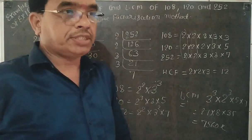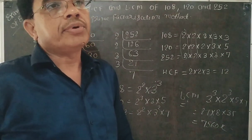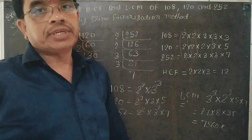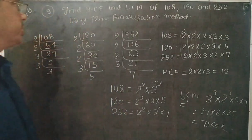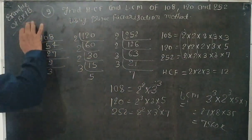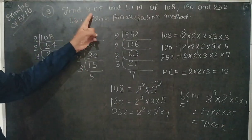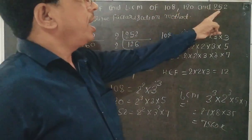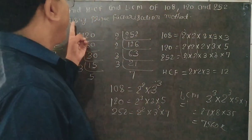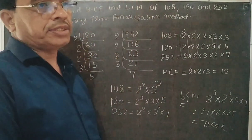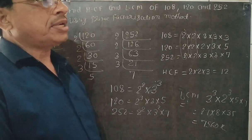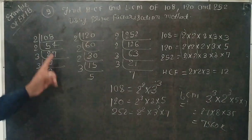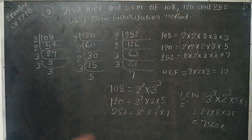Please see here — all questions are related to LCM, HCF, prime factorization method, and equal division method. Question number 9, example of Exercise 1B: find the HCF and LCM of 108, 120, and 252 by using prime factorization method. One method is equal division method and the other is prime factorization method. So dear student, first find the prime factorization of each number one by one.